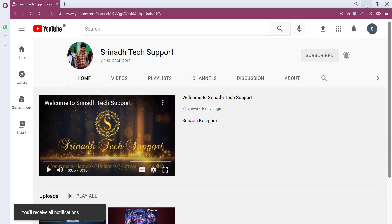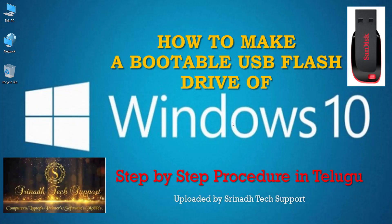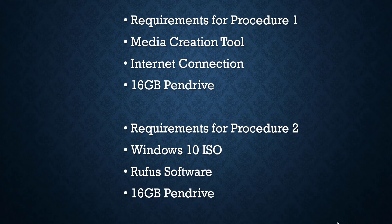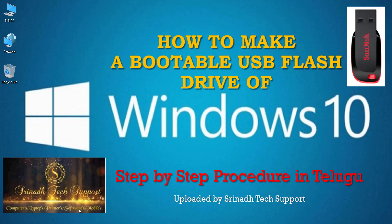First, let's cover the requirements. There are two procedures to create a Windows 10 portable pen drive. The first procedure requires the Media Creation Tool, an internet connection, and a 16GB pen drive. The second procedure requires a Windows 10 ISO file, Rufus software, and a 16GB pen drive.